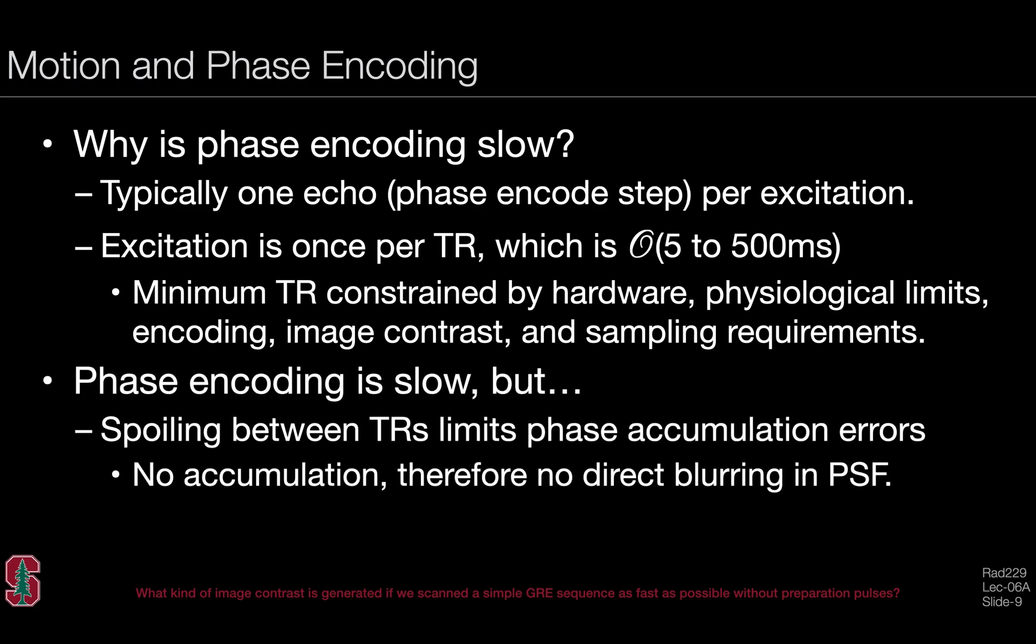Phase encoding is slow, but interestingly, spoiling between the TRs limits the phase accumulation errors. For static objects, or for some objects, the phase accumulation can lead to very little artifact in the phase encode direction. There's no accumulation of phase directly, and therefore there's no direct blurring in the point spread function. Something quite different happens when we think about object motion occurring while k-space is being acquired.